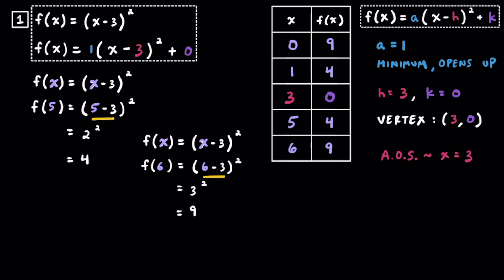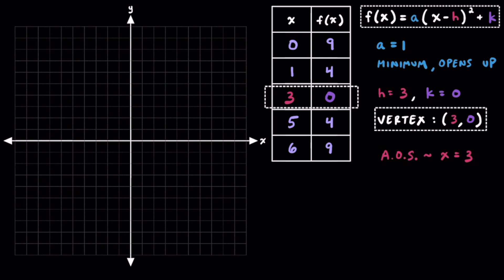At this point we have a completed table with 5 ordered pairs, so let's sketch a graph on a coordinate plane. Our vertex is 3 comma 0, located on the positive x-axis. Since h equals 3, I'll sketch the vertical axis of symmetry there. The points 1 comma 4 and 5 comma 4 are equidistant on both sides in quadrant 1. The point 0 comma 9 is along the y-axis and is our y-intercept, and 6 comma 9 matches it on the right. Now we draw a smooth curve through all five points to represent our parabola.